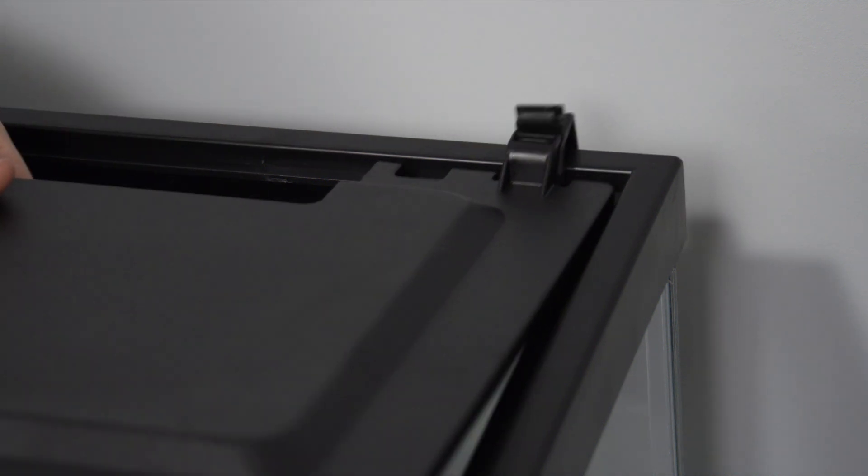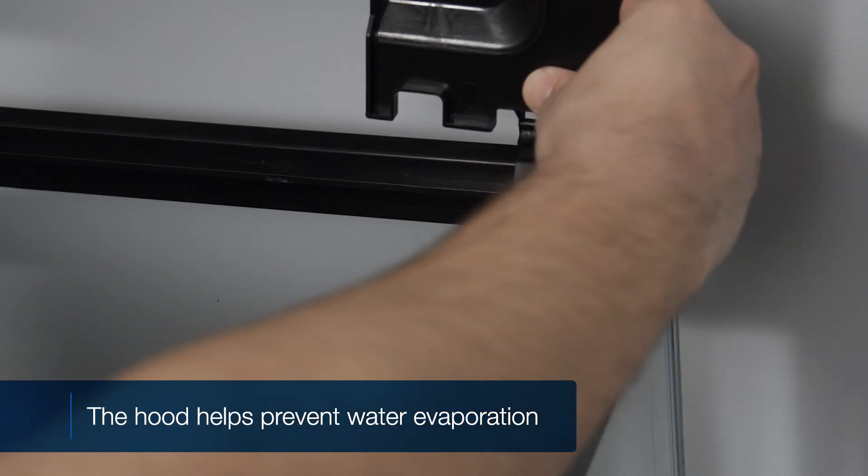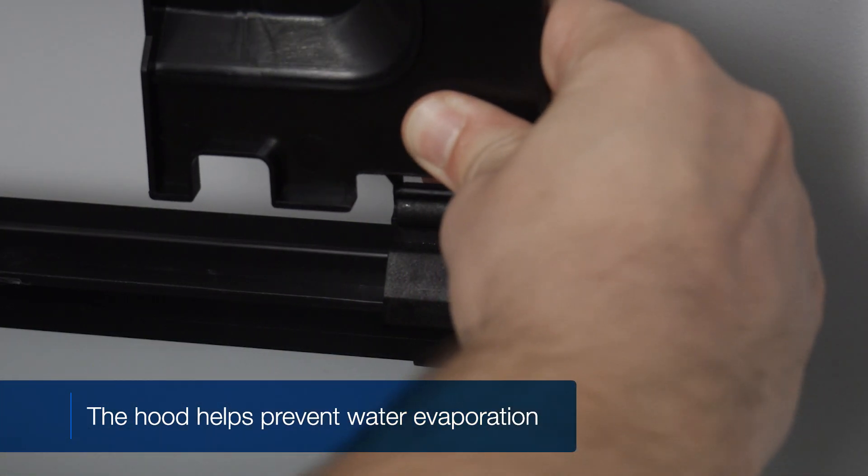To snap the frame clips firmly into place, rotate them towards you, then back. Add the hood to your tank by pressing the hinges directly down into the frame clips.